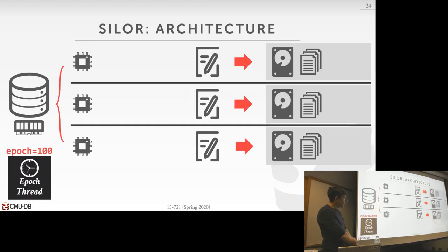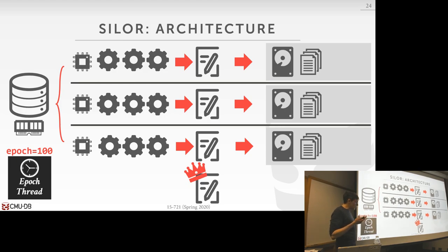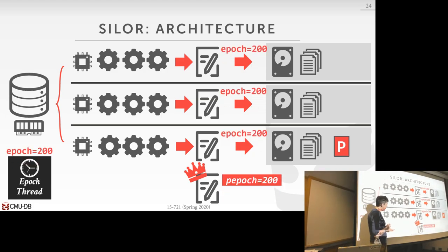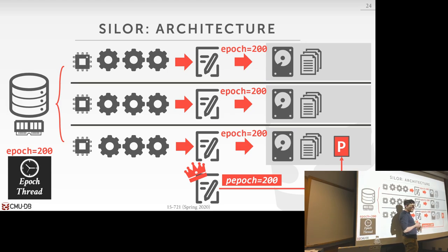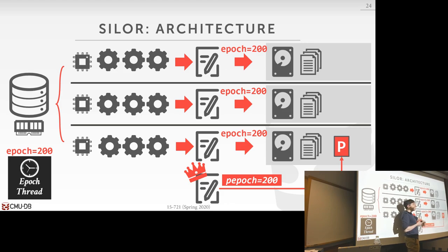The architecture has multiple logger threads each with their own log file and pool of worker threads, plus a persistent epoch thread that updates the epoch file on disk. When the epoch changes, everyone flushes their pending changes up to that epoch. Once all logger threads confirm they've written to disk, the persistent epoch file is updated. The fsync for the persistent epoch file is needed if you rely on it to determine the intersection of epochs across all log files.